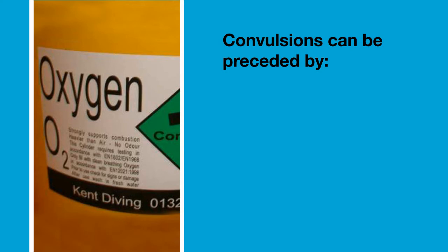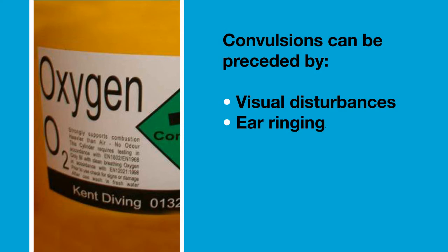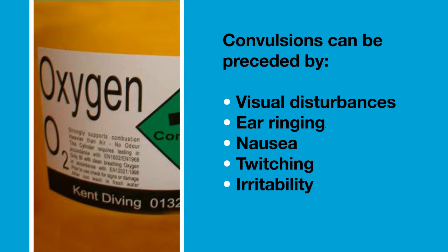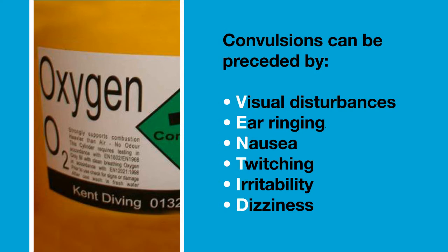Convulsions may, but not always, be preceded by the following symptoms: visual disturbances, ear ringing, nausea, twitching especially in your face, irritability, and dizziness. You can remember these symptoms with the word VENTED.